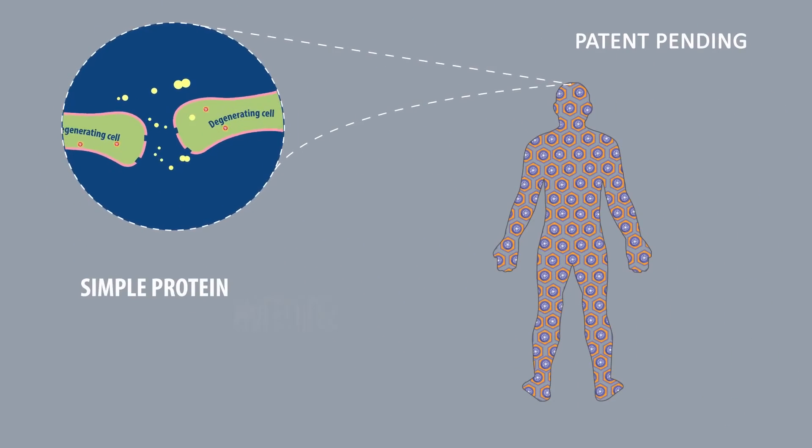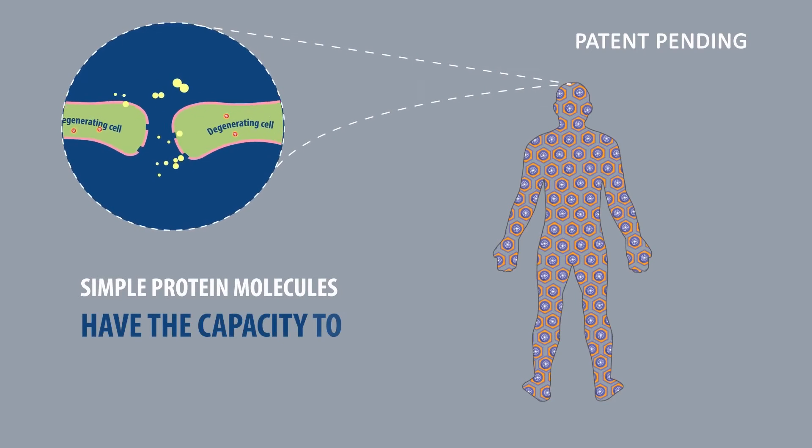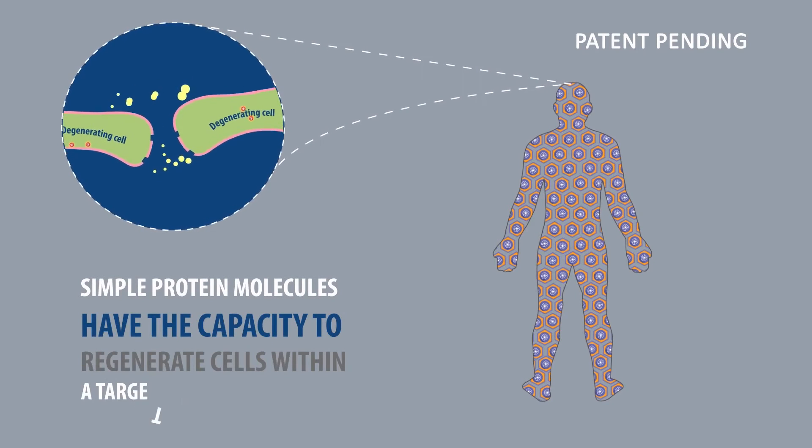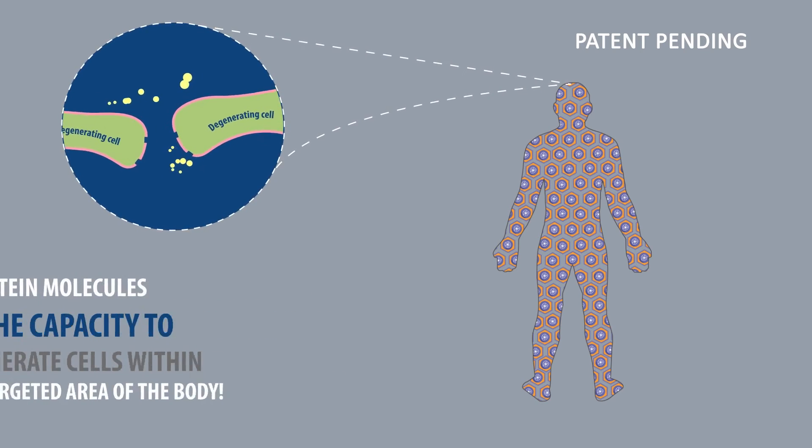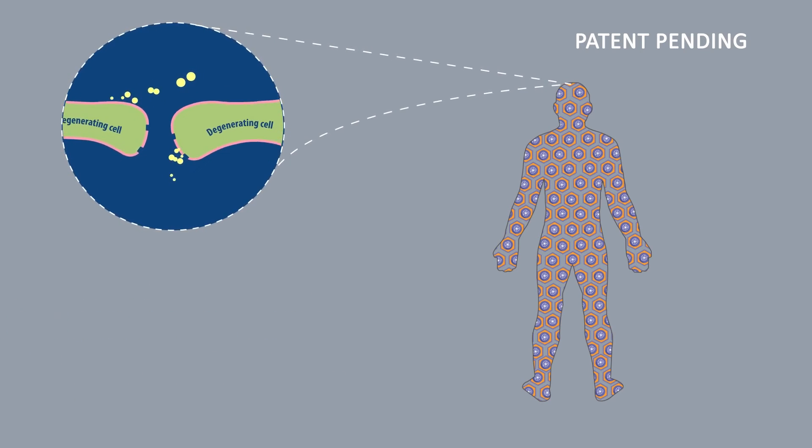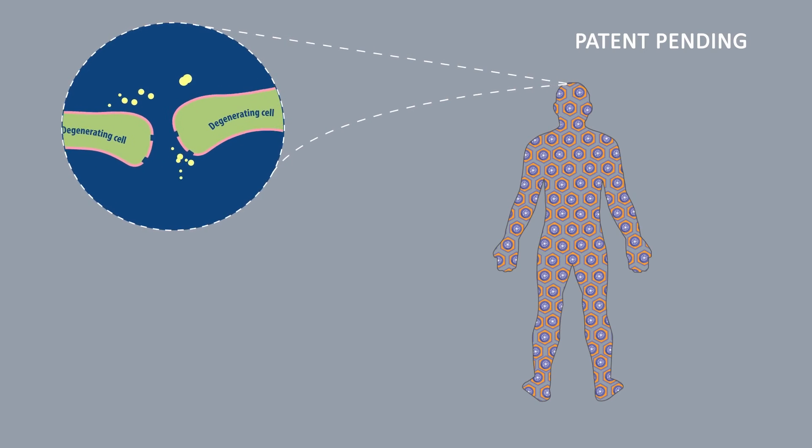Simple protein molecules have the capacity to regenerate cells within a targeted area of the body. In just the last few years, researchers have discovered significant GFs in the human body. However, RCT is not announcing names or structures involved in the treatments at this time due to confidentiality and ongoing patent work.